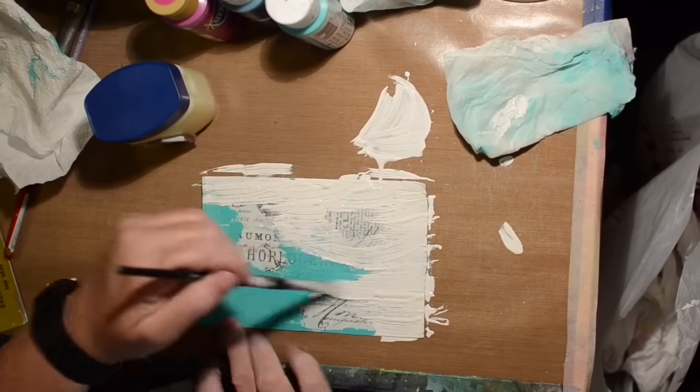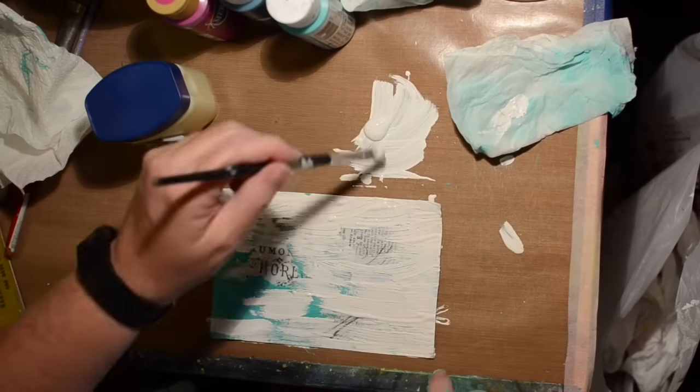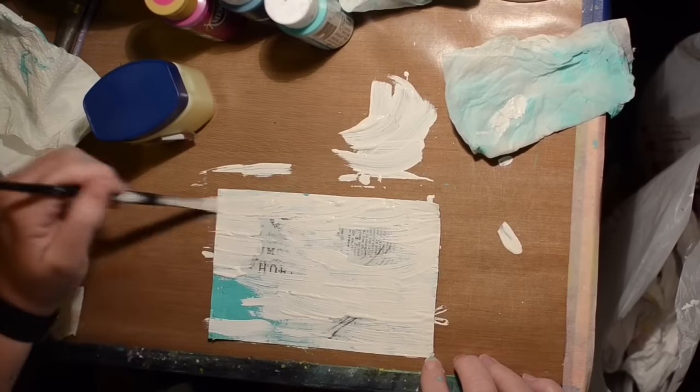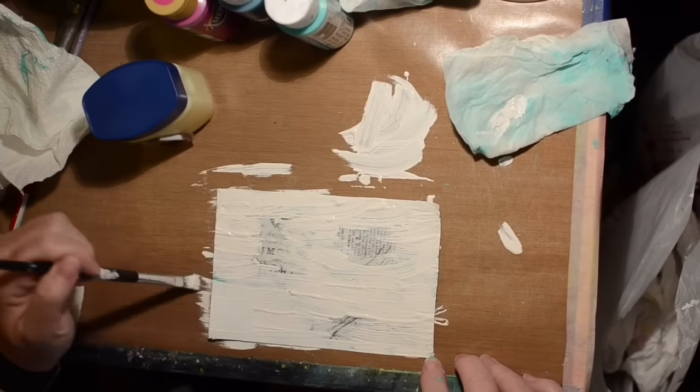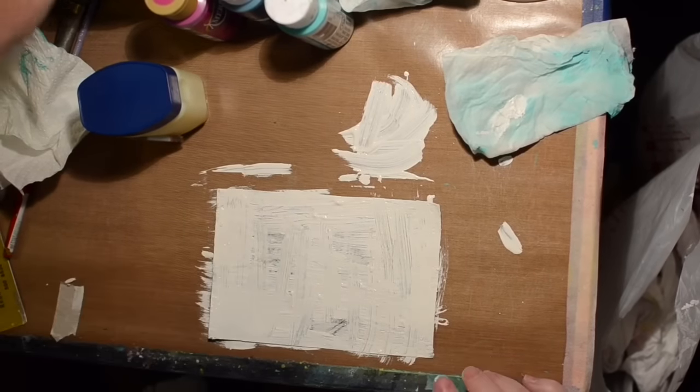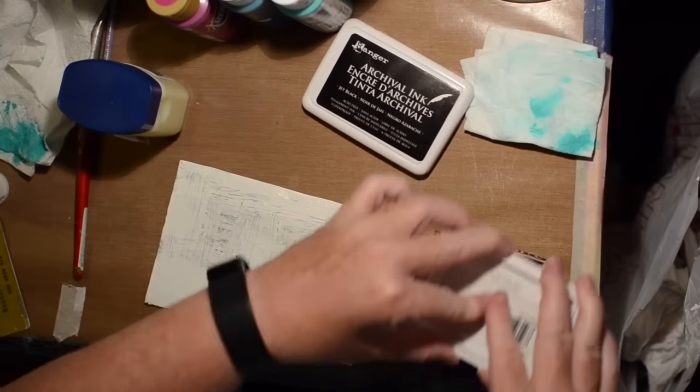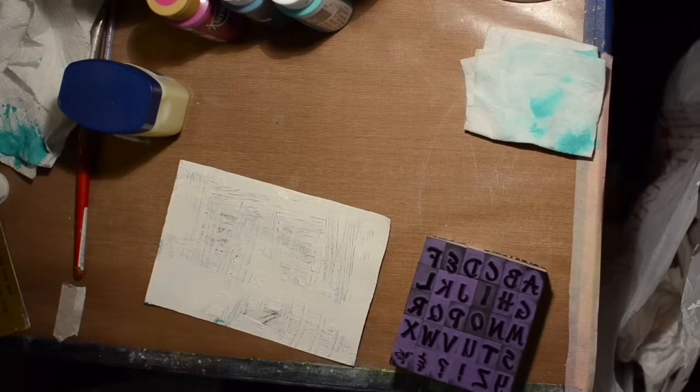So, our next layer is going to be white, and this is just a white craft paint. I think it's Craftsmart and Apple Barrel are the two brands that I'm using for these first two colors. And the color before was Ocean Breeze by Craftsmart.